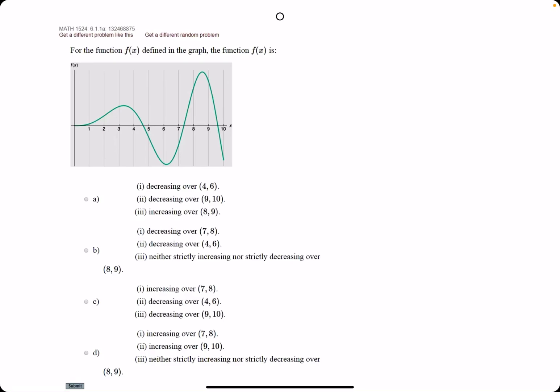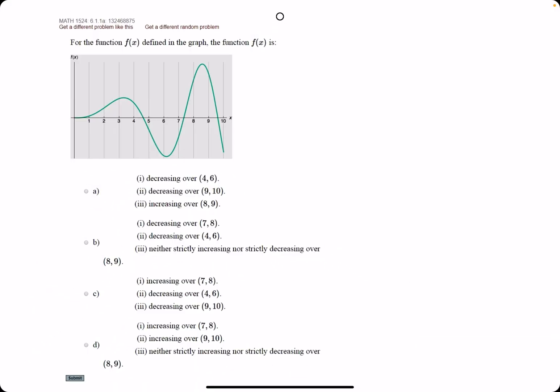Okay, second example. For this one, feel free to check out the other example if you need more of a breakdown, but I'll just breeze through this one. In this problem, we're given a function on a graph, the original function f(x), and the question is basically on which intervals is it increasing, decreasing, or doing neither.